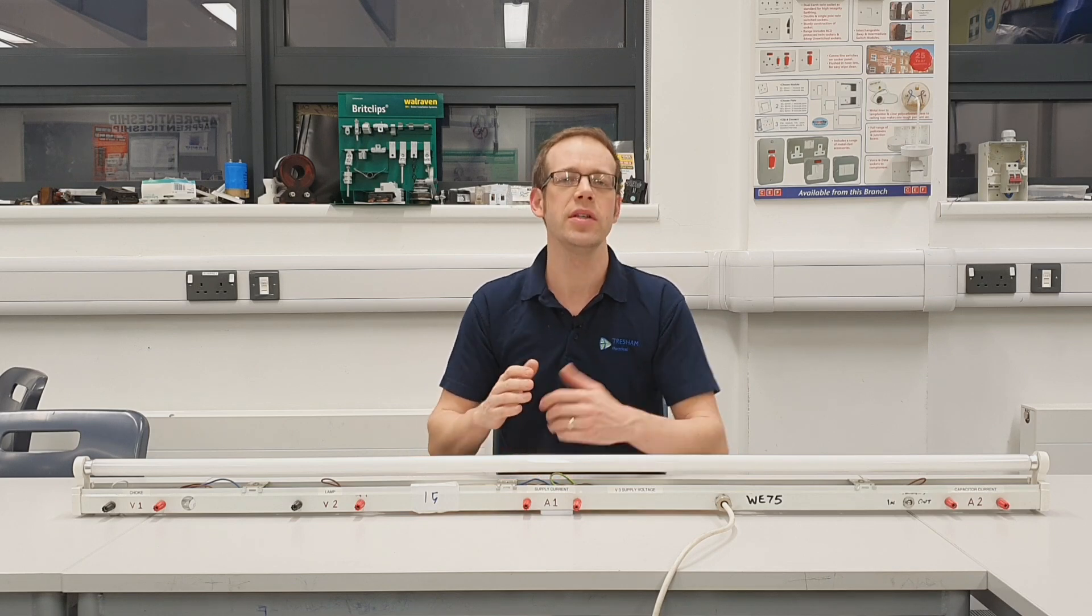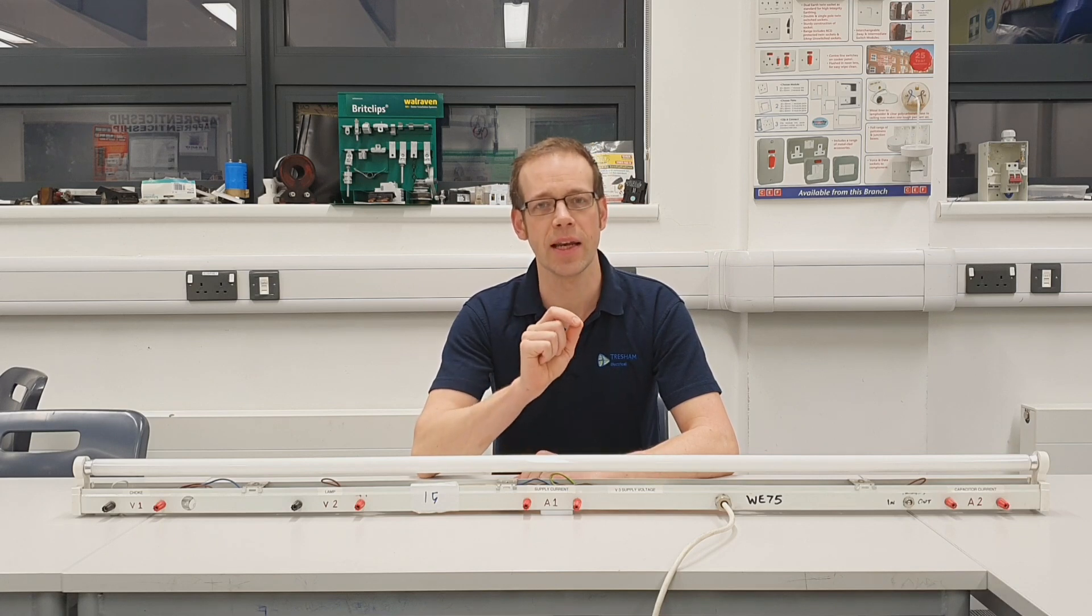What we're going to do in this video is look at constructing a scale drawing of what's happening with the voltages inside our fluorescent light. Now this is quite an important skill, it may be something that you're requested to do in an exam, but it will also help to really reinforce your understanding of how we've got more voltage inside the fluorescent light than we're applying to it, and it all boils back down to those important phases. So let's cut over to the whiteboard.